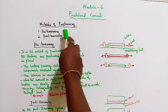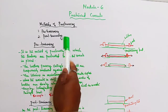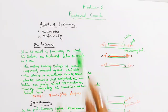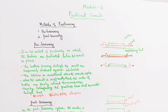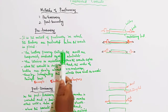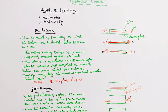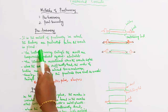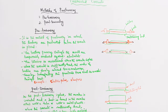Methods of pre-stressing: pre-tensioning and post-tensioning, two methods of internal pre-stressing. Pre-tensioning is the method in which the tendons are pre-stressed before the concrete is placed - the tendons are pre-stressed first, then the concrete is placed in the next step.